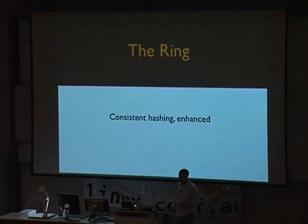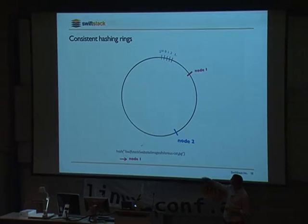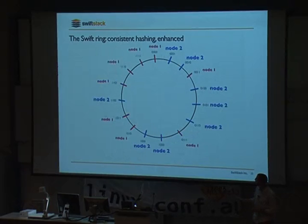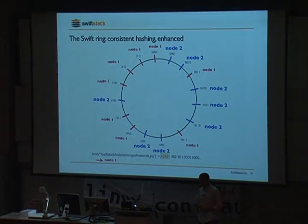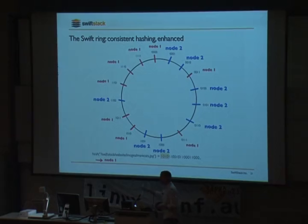Swift uses consistent hashing with some enhancements. A request comes in, you figure out where it lives based on the hash of something, and you improve it by adding more virtual nodes. What Swift has done is divide the overall namespace keyspace into equally sized chunks. This allows you to simply hash the name of an object, take the first few prefix bits, do a direct lookup, and figure out what partition of the keyspace you need — then you know exactly what storage nodes those are mapped to. This mapping of the keyspace to the storage nodes is the Swift ring.